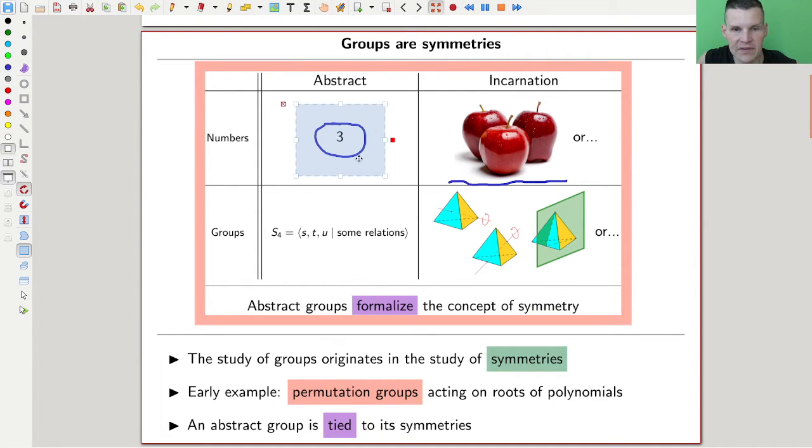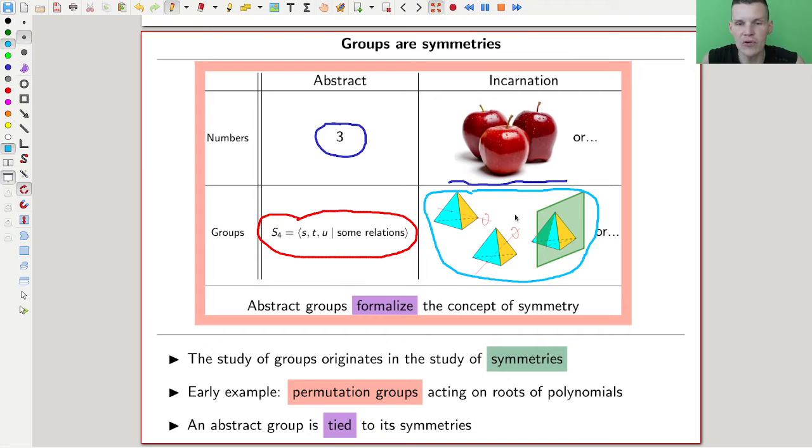And for groups, it's the same. So an abstract group was developed, the theory of abstract groups was developed much later than the incarnations. But an abstract group is usually something like given by some rules, some algebraic rules, how you stack things together. But they really thrive through their applications, through their appearance as symmetries of something. So here's the symmetric group S4, the symmetries of the tetrahedron.